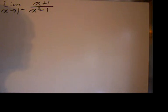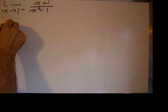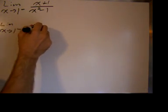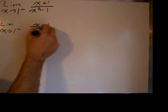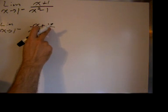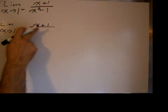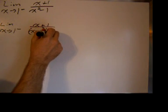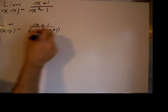Before we look at the form, let's factor the denominator. So we have the limit as x approaches 1 from the left of x plus 1 over x squared minus 1, which factors as x minus 1 times x plus 1.